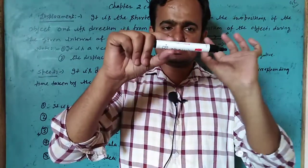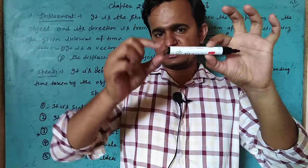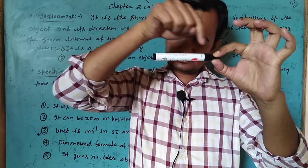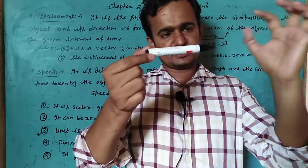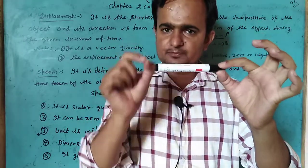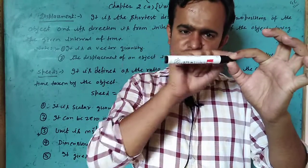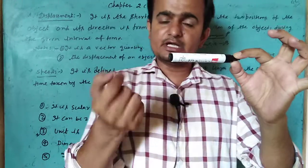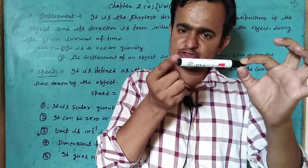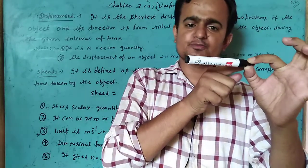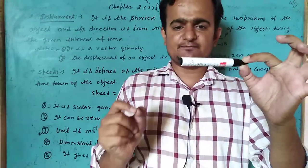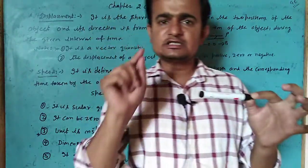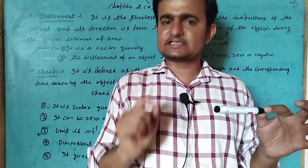Displacement is the shortest distance between the initial point A and the final point B. The shortest distance between the initial point and the final point, with direction from initial to the final position of the object during a given interval of time, is called displacement. Now, some important points about displacement: displacement is a vector quantity.